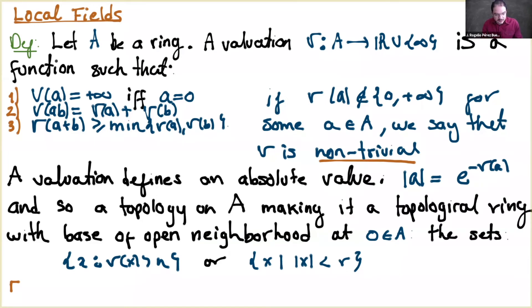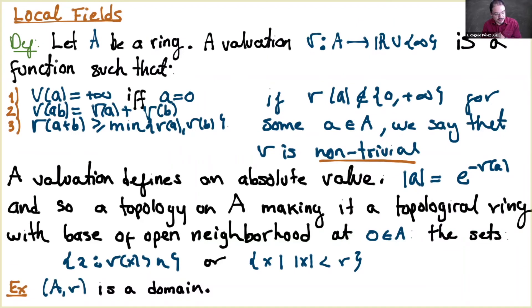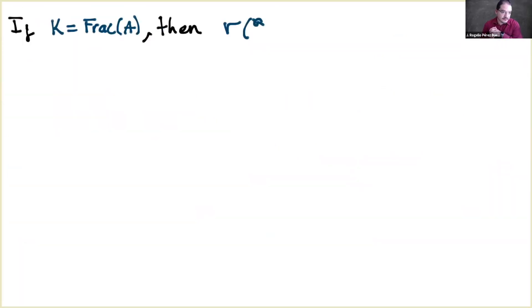The residue field is a field; its characteristic may be zero or positive p. Now we define a valuation field as a field K with a valuation, which is always non-Archimedean. Once we have a valuation and a topology, we can take the completion — exactly as Miriam defined, but for this field. This completion is with respect to the valuation.